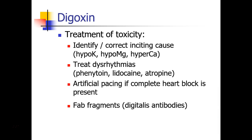If patients have digoxin toxicity, first identify and correct the inciting cause, whether it's hypokalemia, hypomagnesemia, or hypercalcemia. Dysrhythmias should be treated with the appropriate drug, usually phenytoin, lidocaine, or atropine. If complete heart block occurs, artificial pacing may be necessary. In severe cases, digitalis antibodies known as FAB fragments can be administered to bind up the free digoxin.